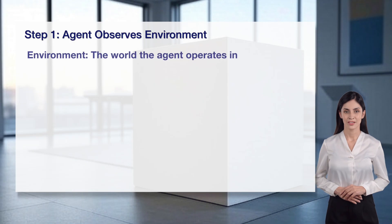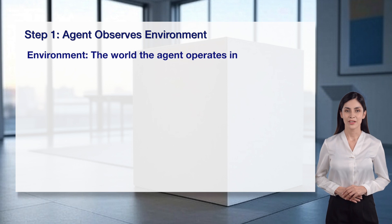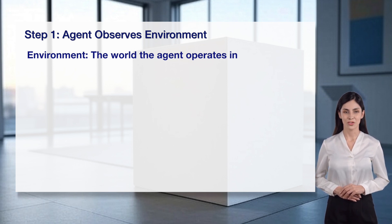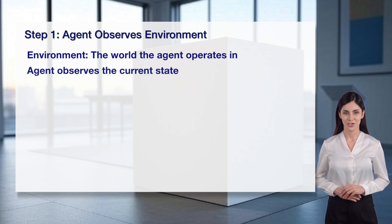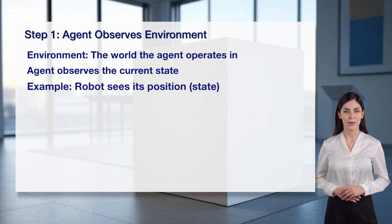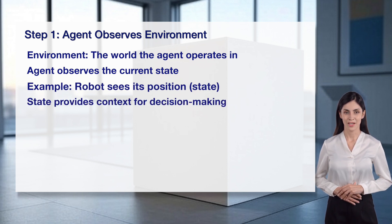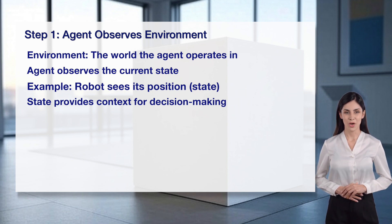The first step in reinforcement learning is that the agent observes the environment. The environment is the world the agent operates in, like a game or a physical space. The agent observes the current state, which is the situation it's in at that moment. For example, a robot might see its position in a room as the state. This state provides the context the agent needs to make informed decisions. Observation is the foundation of the RL process.